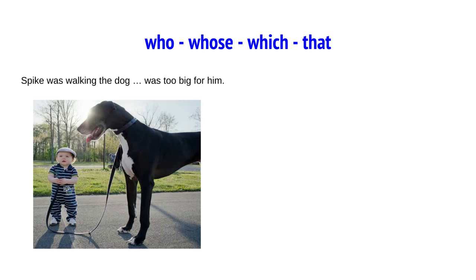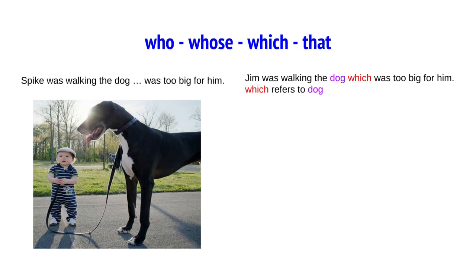Spike was walking the dog which was too big for him. Why which? Which refers to dog. Dog is an animal — it is a thing. So, which. Note: animals and things, then you use which.